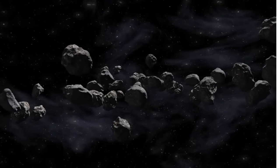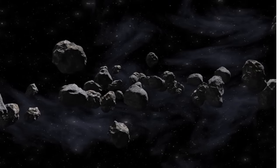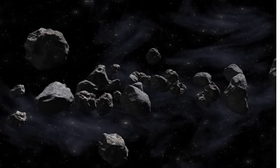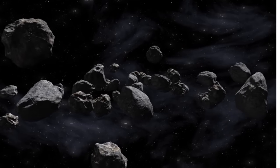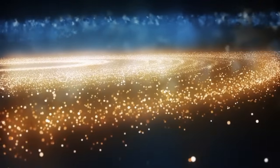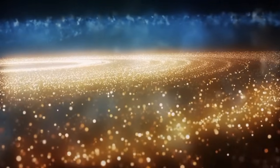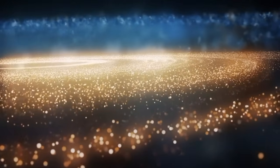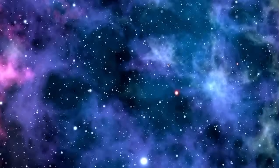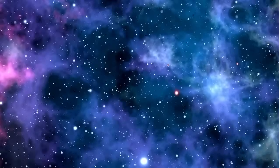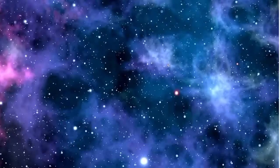Einstein's thoughts from the early 1900s are the foundation for understanding how time behaves when things move incredibly fast. He had two major theories: special relativity and general relativity. The special theory from 1905 completely changed how we think about time and space. It says that the rules of physics are the same for everyone who isn't accelerating, no matter how they're moving.